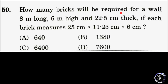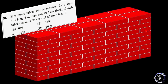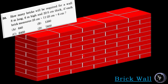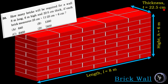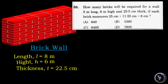Question number 50. How many bricks will be required for a wall 8 meters long, 6 meters high and 22.5 centimeters thick, if each brick measures 25 cm into 11.25 cm into 6 cm? Here we have a brick wall constructed using several bricks. Dimensions of the wall and the dimensions of the brick are given. We have to find how many bricks of the given dimensions are required to construct the wall of given dimensions. Dimensions of the wall: length L is 8 meters, height H is 6 meters, and thickness T is 22.5 centimeters.